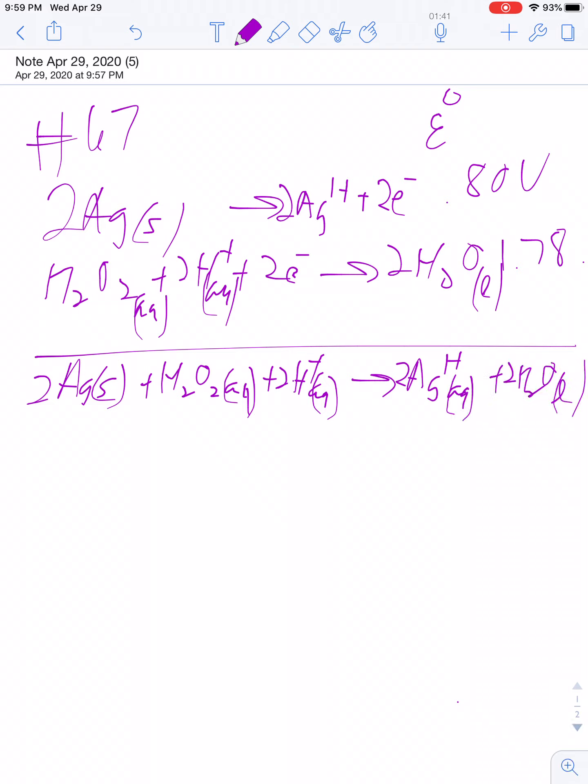So the Nernst equation is the new cell potential is equal to the standard cell potential minus 0.0591 over N times the log of Q. So the standard cell potential is one atmosphere and one mole. We add that up. So we have to flip the sign up there. So our cell potential is 0.98 volts.